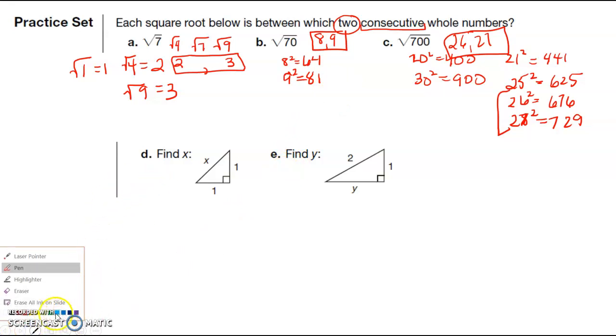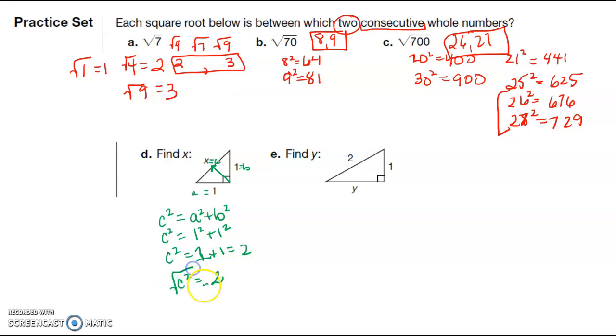The other part of lesson 100 is more of the Pythagorean theorem. I know that this is going to be C, and this is A, and this is B. C squared is equal to A squared plus B squared. C squared is equal to 1 squared plus 1 squared, which is 2. C squared is equal to 2, so we square root both sides and C is equal to the square root of 2. This is actually what we call a special right triangle, but you'll learn that in geometry.